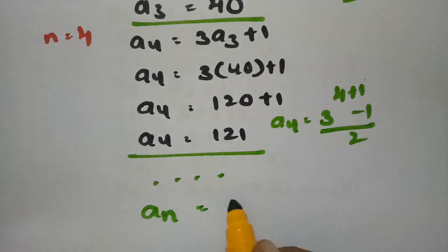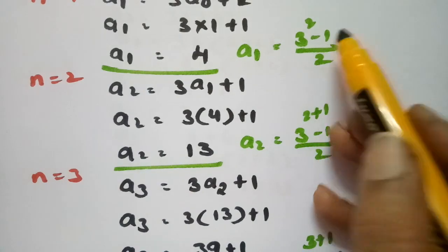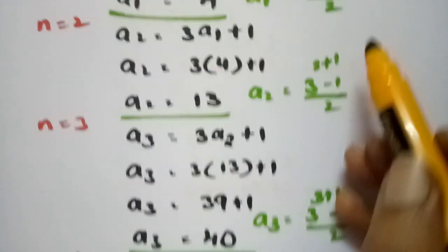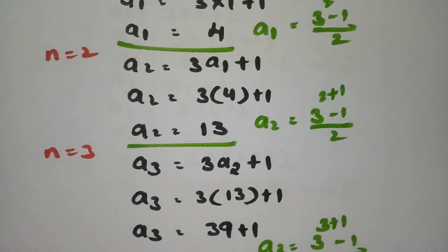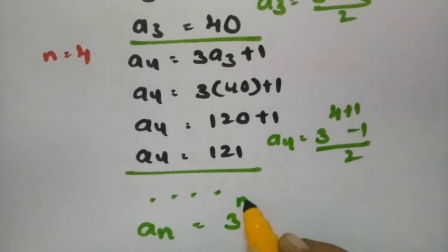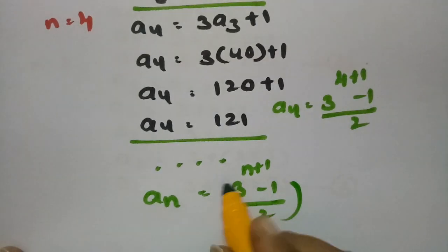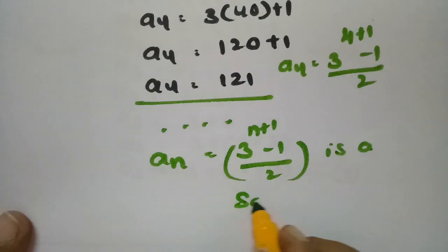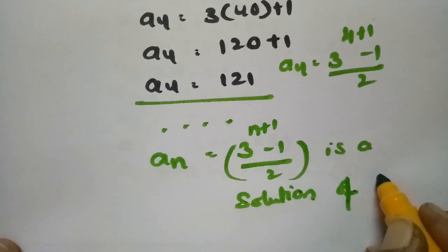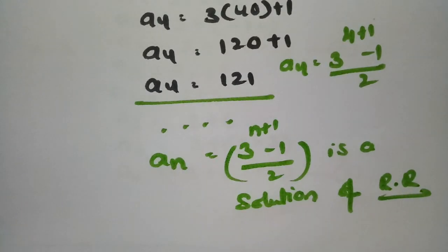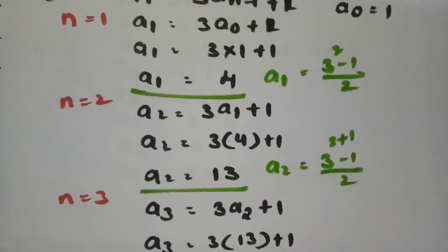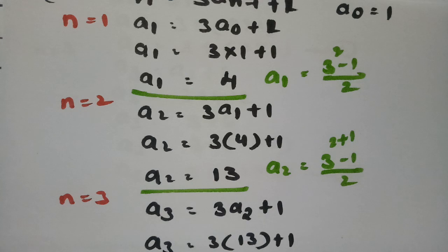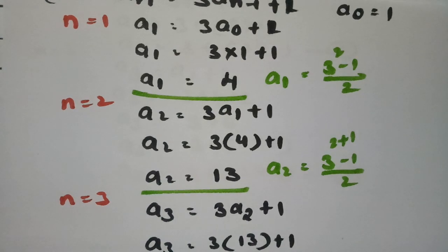Observing the pattern, the exponent goes 2, 3, 4, 5, which corresponds to n+1. Therefore, aₙ = (3ⁿ⁺¹ - 1)/2 is the solution to this recurrence relation. This is how we solve using the iterative approach. Please try these problems yourself, subscribe to the channel, and thank you so much.